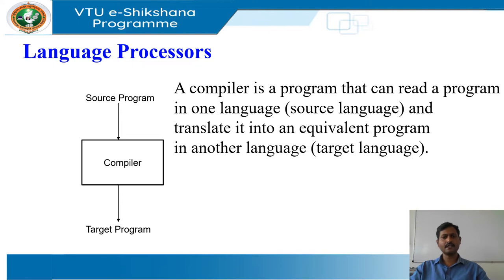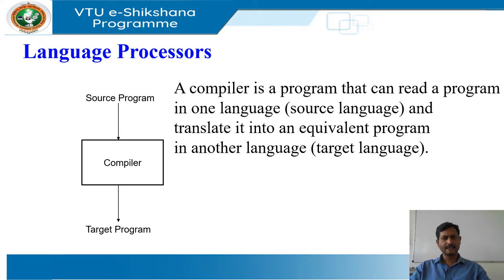A compiler is a program that can read a program in one language, that is a source language, and translate it into an equivalent program in another language, that is a target language. If the target program is an executable machine level language program, it can then be called by the user to process inputs and produce outputs. A compiler is also expected to report errors if the source program has errors in it.